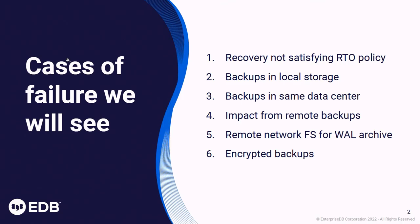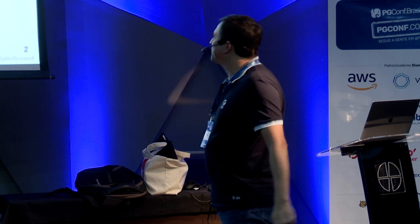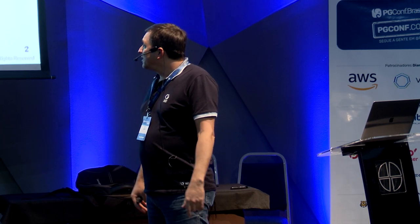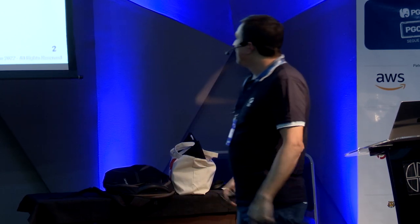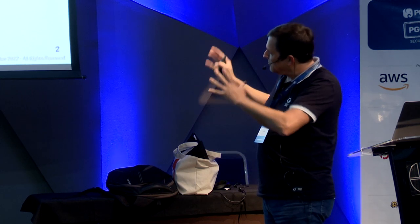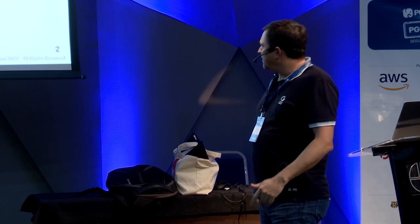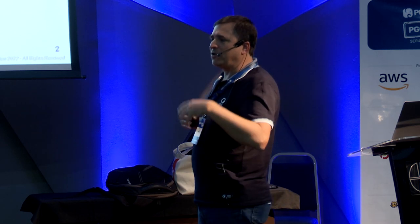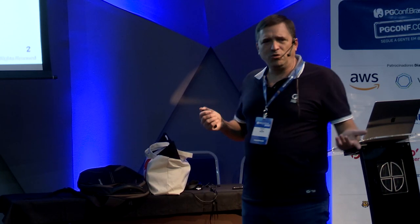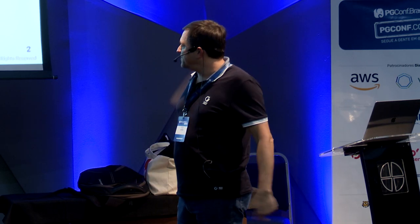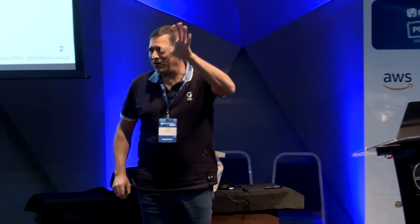We're going to talk about some issues with backups in local storage, backups in the same data center, and the impact of remote backups. We're going to grow incrementally, showing how we fixed one thing and here's another problem that we need to fix. Then the last two are not so related with the first four: remote network file system — having your WALs in a network file system like NFS — and encrypted backups.